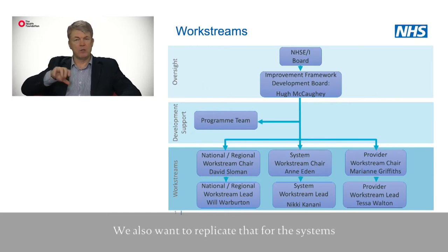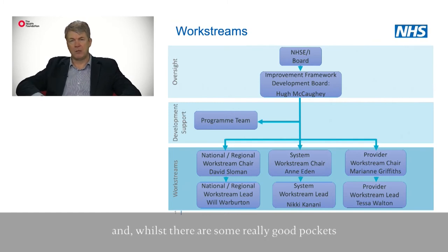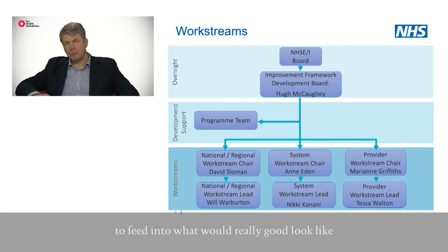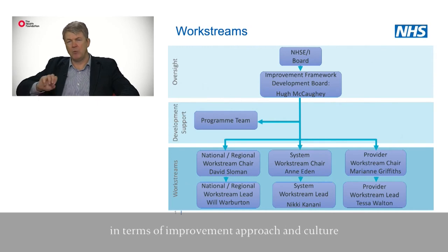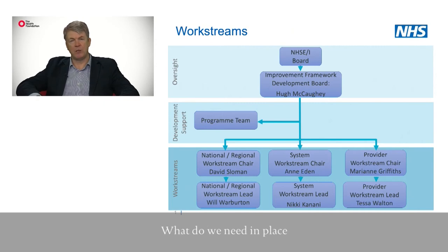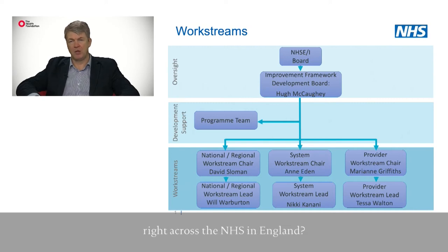That's for the providers. We also want to replicate that for the systems. While there are some really good pockets of work being done at system level, we really need people across primary care and social care and other partners to feed into what really good would look like in terms of improvement approach and culture within a system. And then finally, the last piece is at the national regional level — what do we need in place in order to support this approach right across the NHS in England?